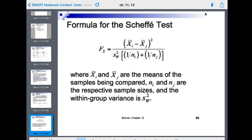Formula for the Scheffé test: Fs is equal to Xi minus Xj squared divided by the sum of squares within times 1 over ni plus 1 over nj, where X bar i and X bar j are the means of the samples being compared, ni and nj are the respective sample sizes, and the within group variance is s squared w.